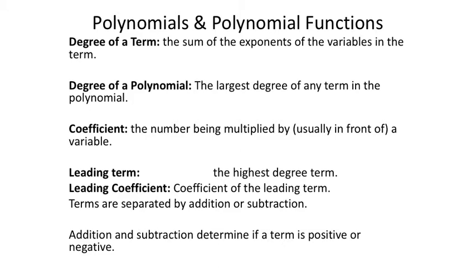The degree of the polynomial is the sum of the exponents of the variables in the terms — just the variables. If a number in a term has an exponent, that doesn't count. For example, x·y² would have a degree of three: one for the x, two for the y. For a term like 4z⁸, the degree is eight — the four has nothing to do with the degree.